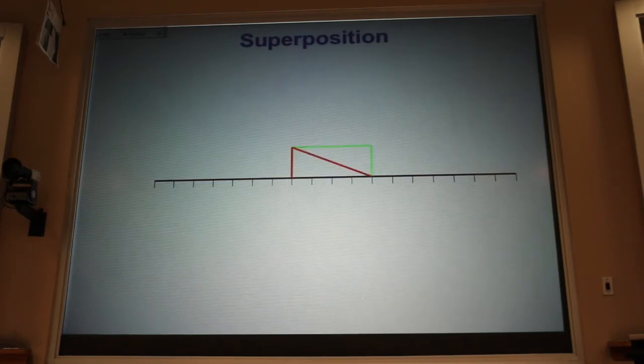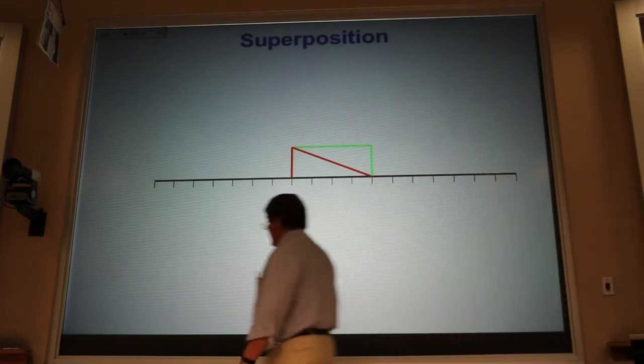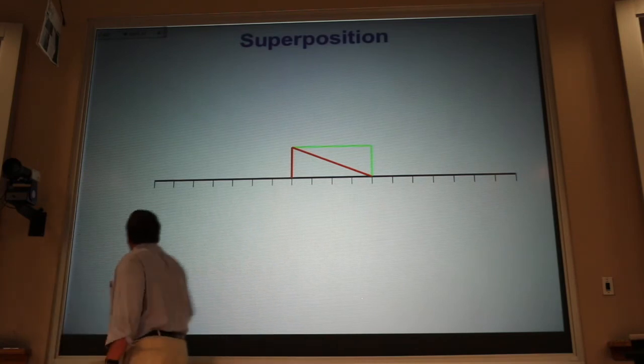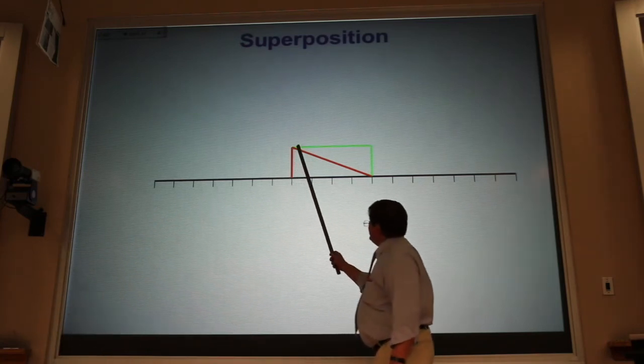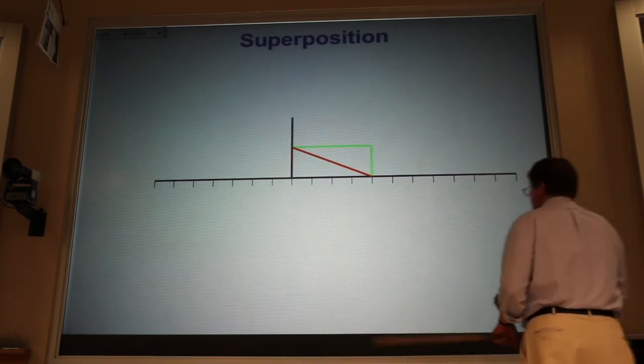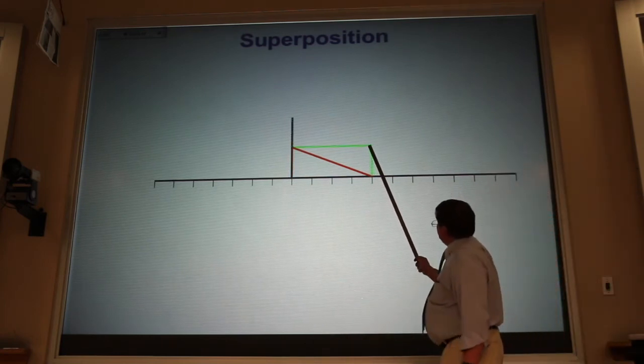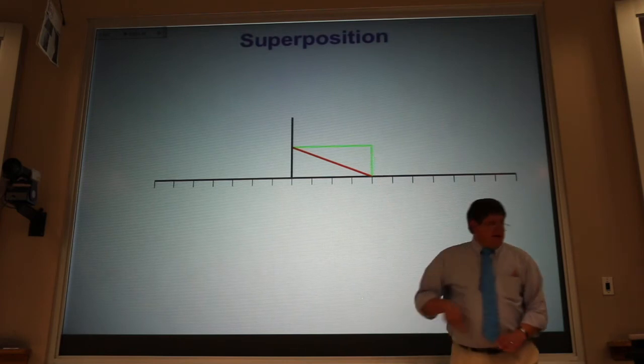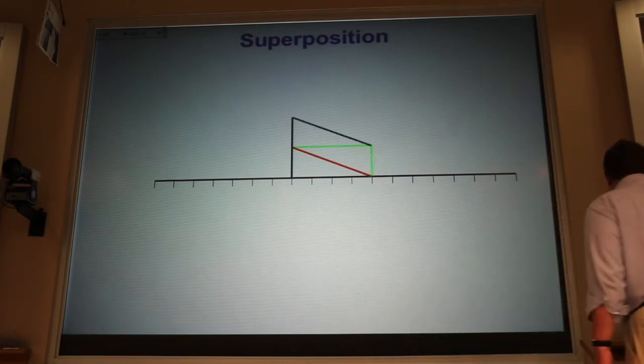And then, as they pass further through each other, we just keep on doing that. Now, I would have one unit of red and one unit of green here, so that would be two units. Here, I would have just one unit of green, and so that would be one unit. And that's what it would look like.